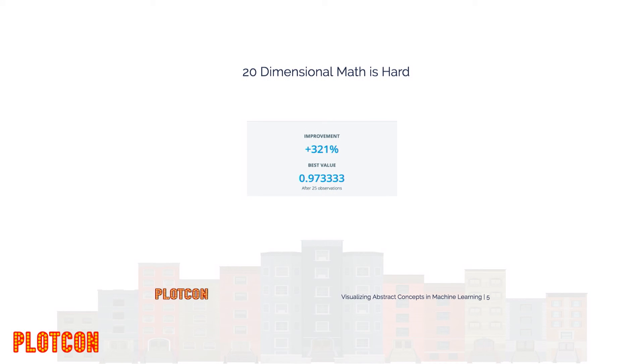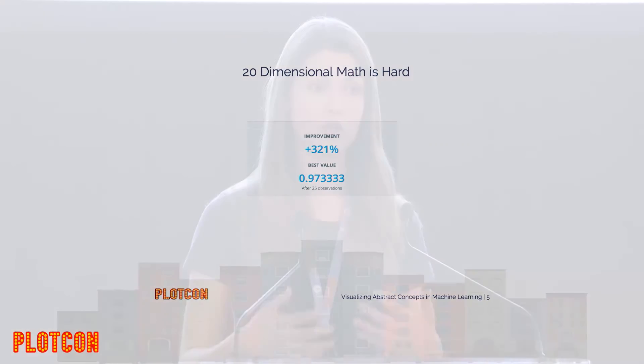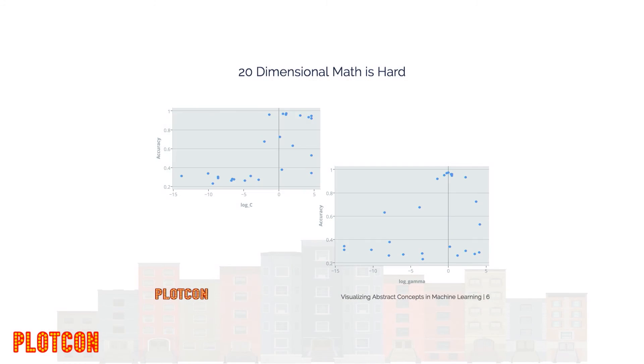The first thing we want to get people to understand with hyperparameter optimization is that they may not want to do 20-dimensional math in their head. A deep neural net had 20 or more setup steps — hidden layers, ratio of training to test data, the architecture — and all those choices interact together to determine the performance of a machine learning model. So just show it to people. We literally just graphed machine learning model performance versus hyperparameter value, but this is not very compelling and does not do a good job of capturing the interactions in a larger dimensional space.